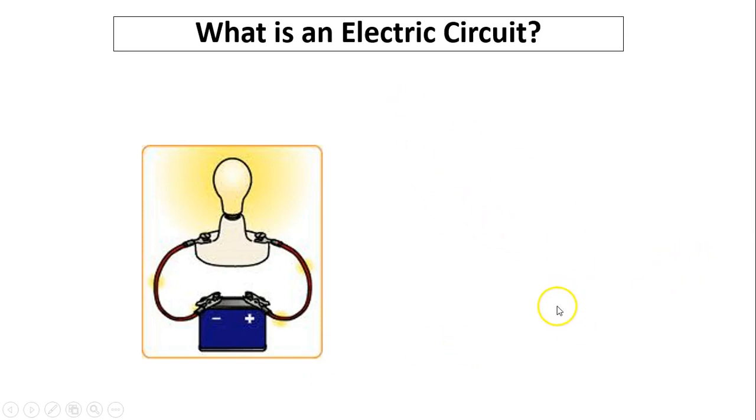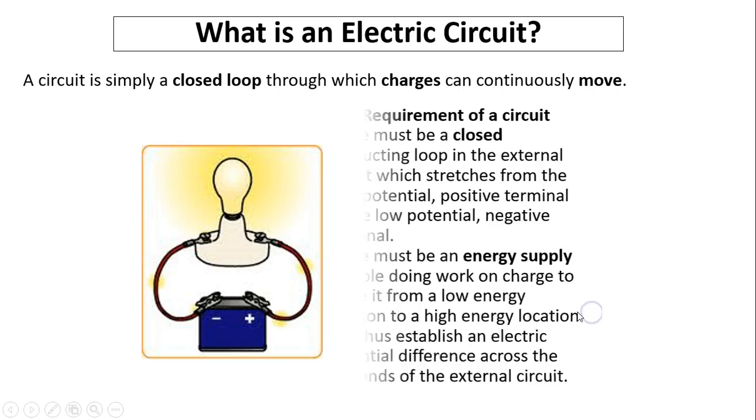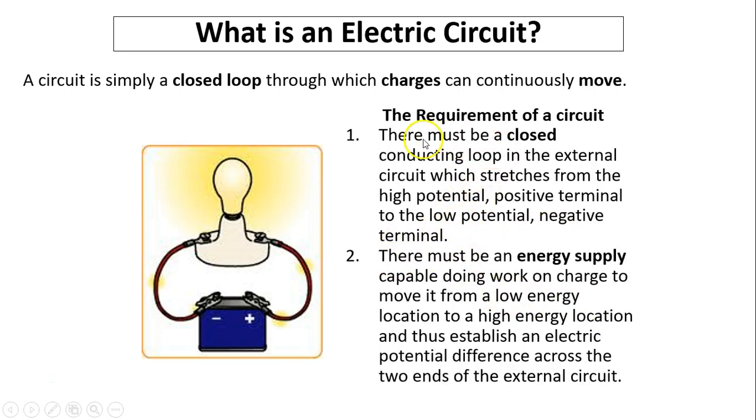What is an electric circuit? A circuit is simply a closed loop through which charge can continuously move. So the two requirements are: there must be a closed conducting loop in external circuit, which stretches from the high potential positive terminal to the low potential negative terminal.